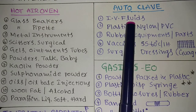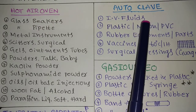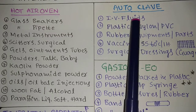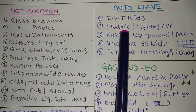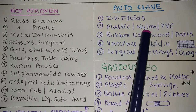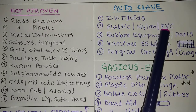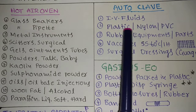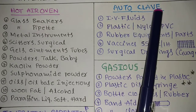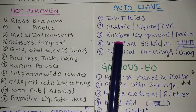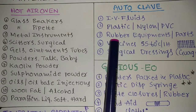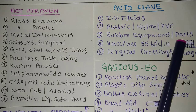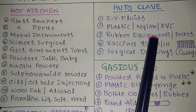For autoclave: IV fluids — and don't confuse IV fluids with IV sets. IV sets are sterilized by radiation. IV fluids packed in plastic bottles or nylon bottles made of PVC (polyvinyl chloride) — both the fluids and their plastic containers can be sterilized by autoclave. Rubber equipment and rubber parts like rubber closures — autoclave is also preferable for these.